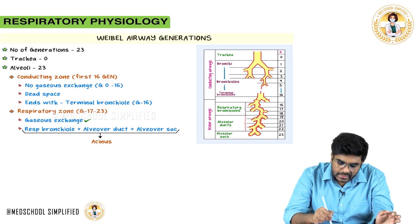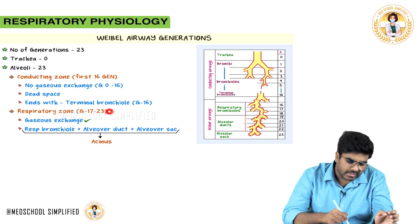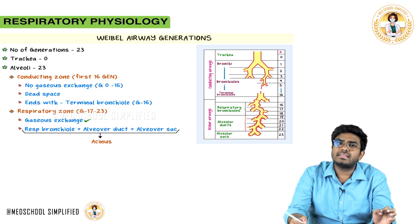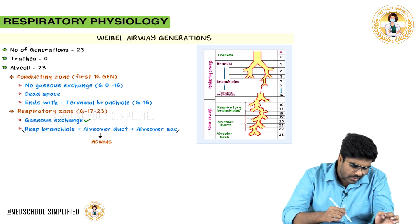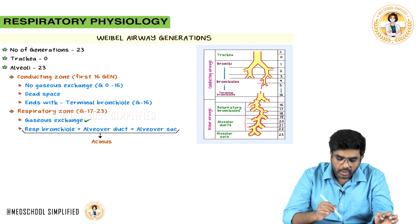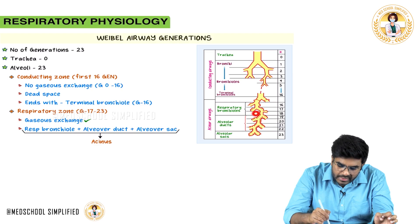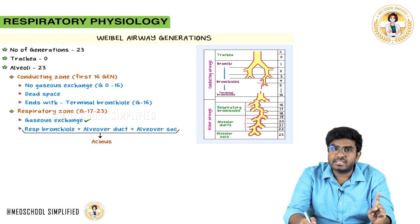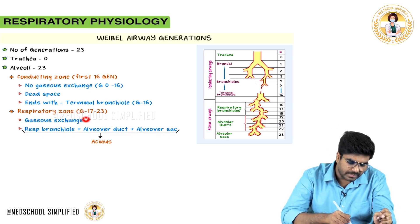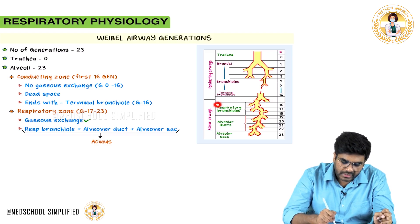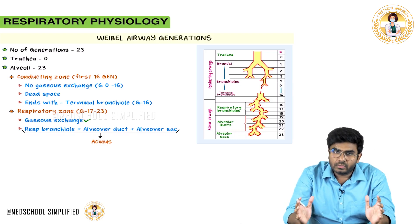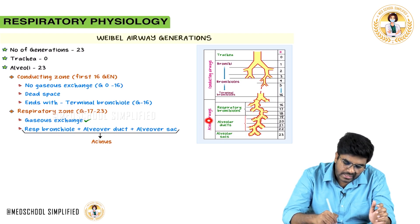Generations 17 to 23 are called the respiratory zone or acinar airways. This includes respiratory bronchioles, alveolar ducts, and alveolar sacs — in all these areas, exchange of gases takes place. All three together are called the acinus.